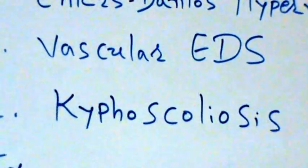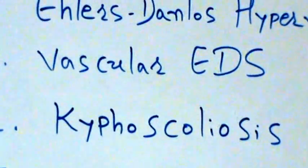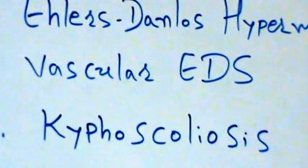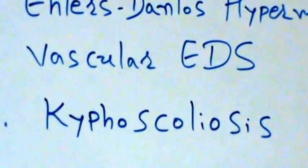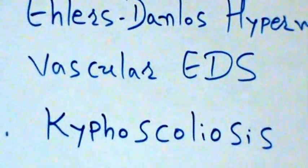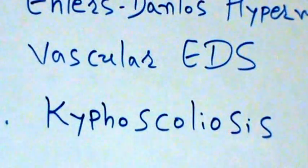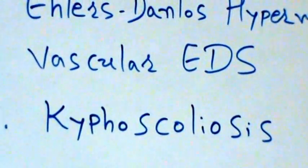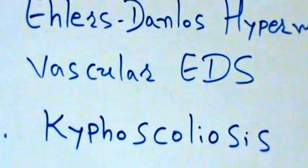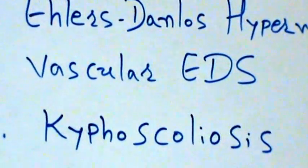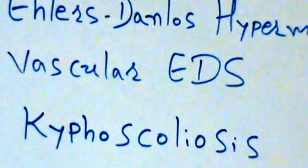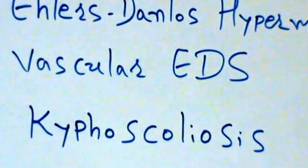The diagnosis of vascular EDS is based on examination and identification of certain features, with confirmation by lab testing. Testing may include DNA sequence analysis, deletion-duplication analysis, and biochemical or protein-based testing. Genetic testing detects 98% of the changes in the gene for vascular EDS; the rest require more specialized tests. The median life expectancy for people with vascular EDS is 48 years.